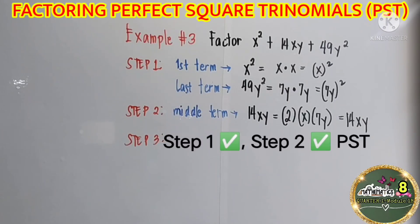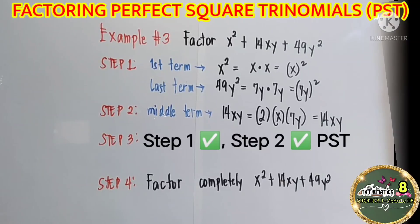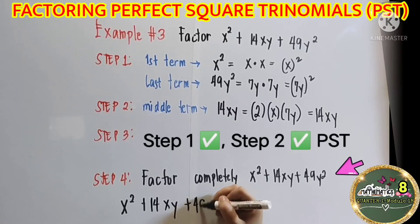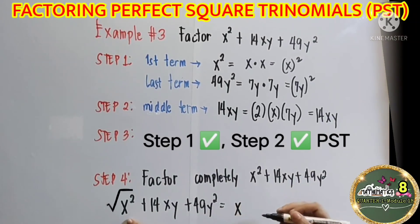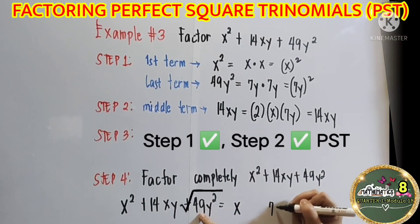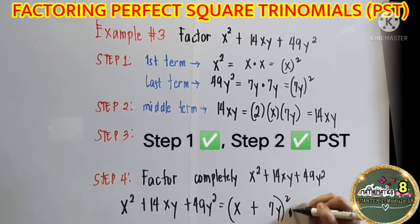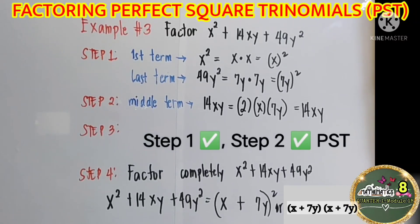For step 3, since the conditions are satisfied, then x squared plus 14xy plus 49y squared is a perfect square trinomial. For step 4, factor completely x squared plus 14xy plus 49y squared. This equals the square root of the first term, which is x, plus the square root of the last term, which is 7y — both positive, so the sign is positive — and then square the binomial. Or you can express your answer as two binomials: the quantity of (x plus 7y) times the quantity of (x plus 7y).